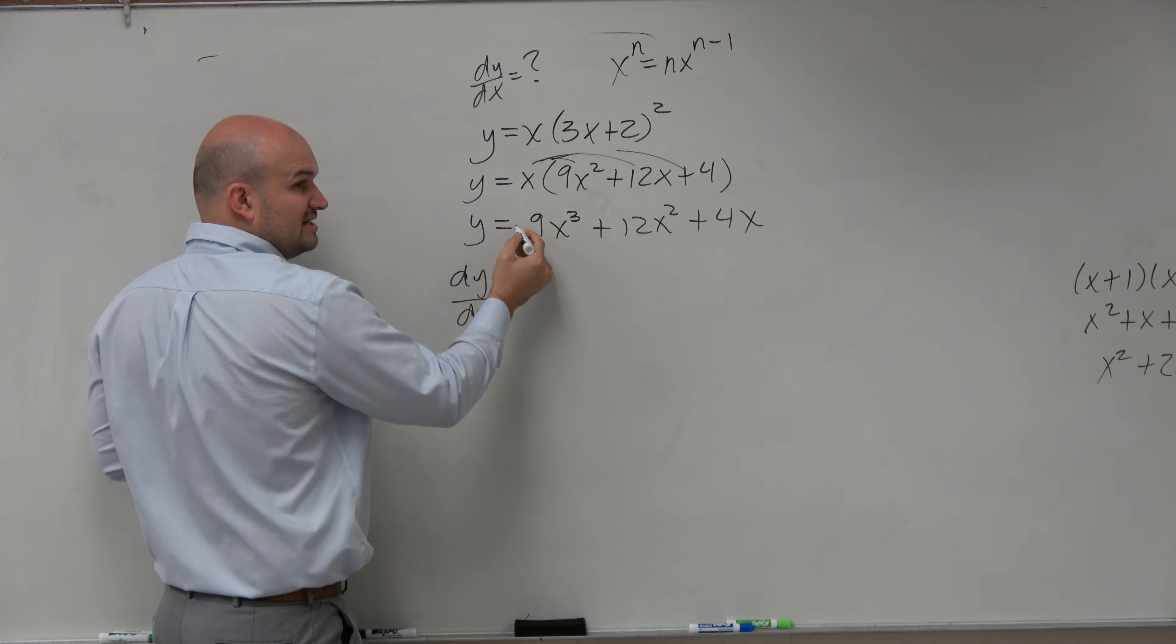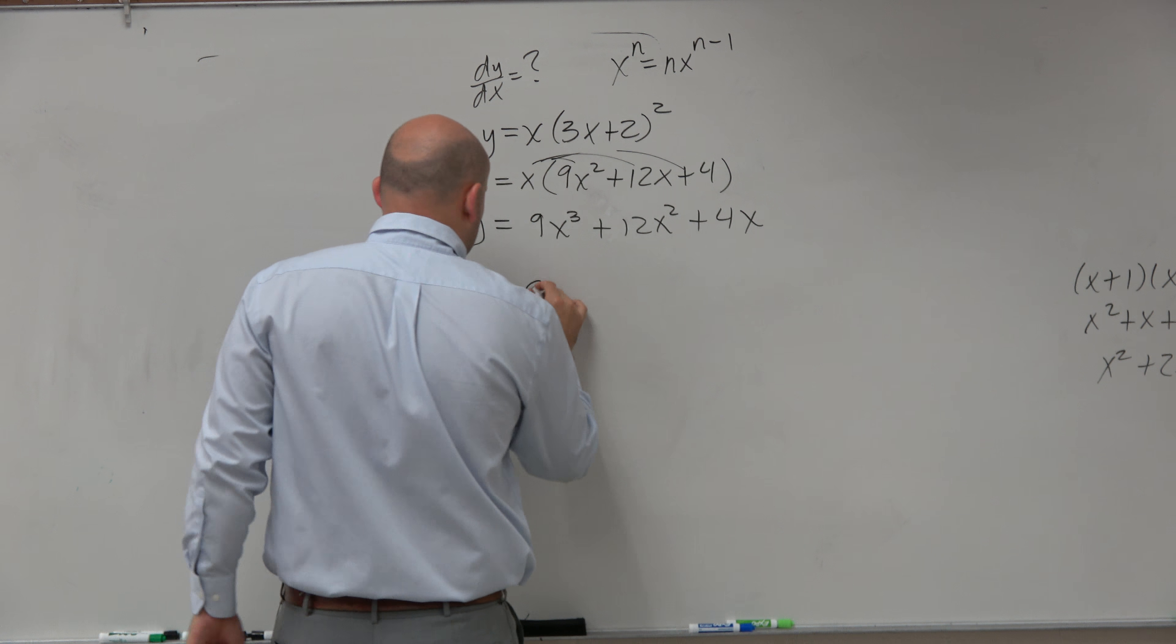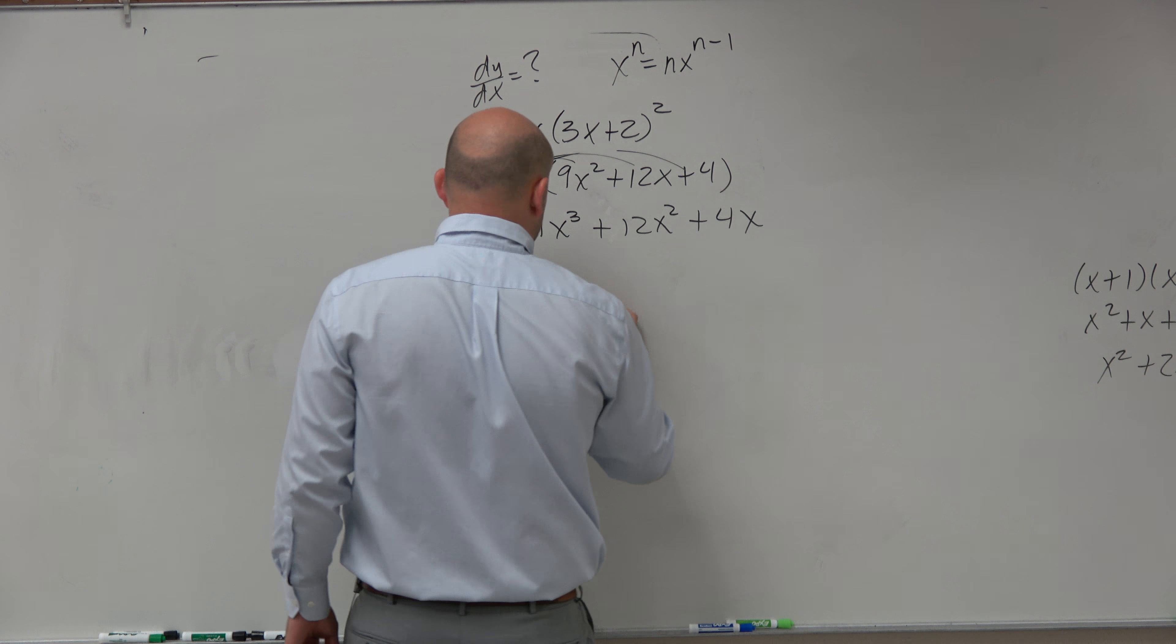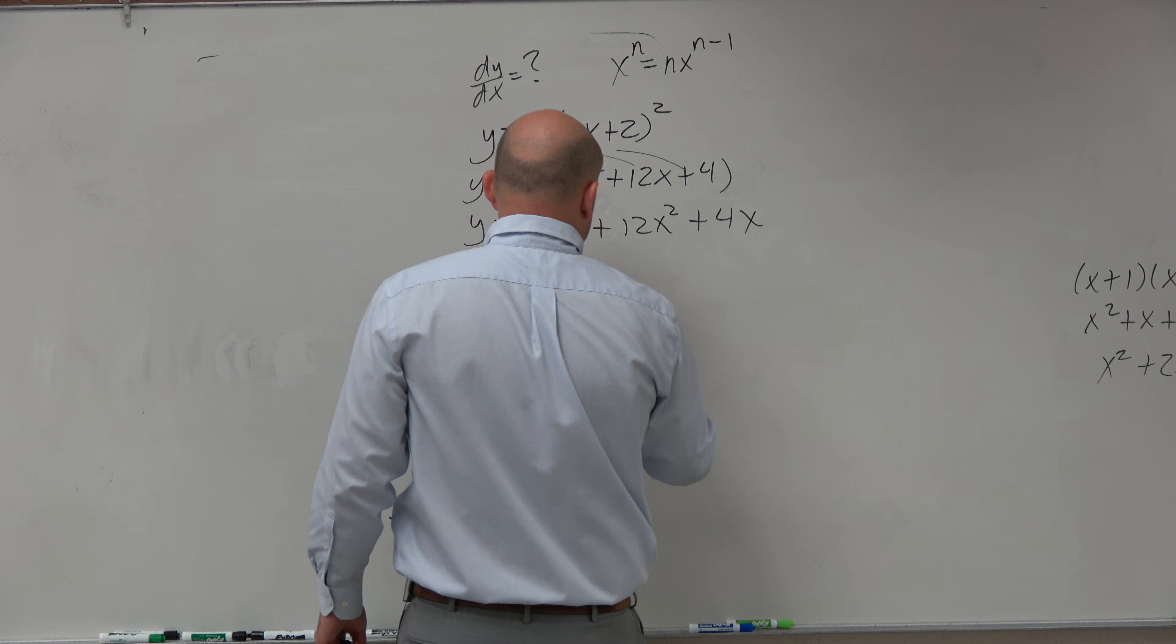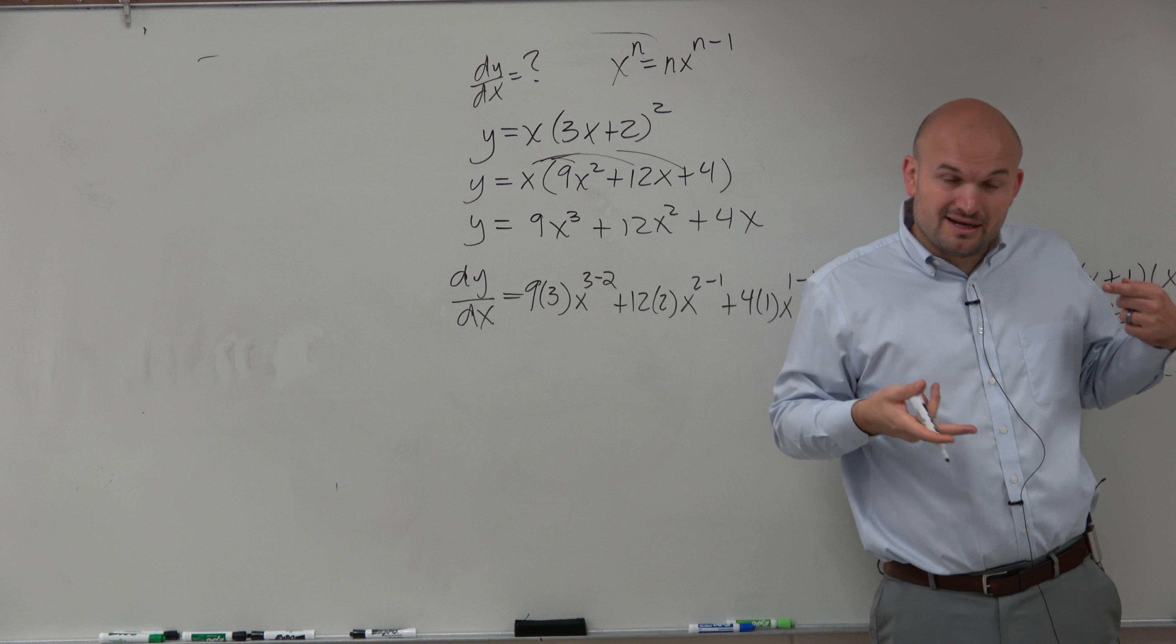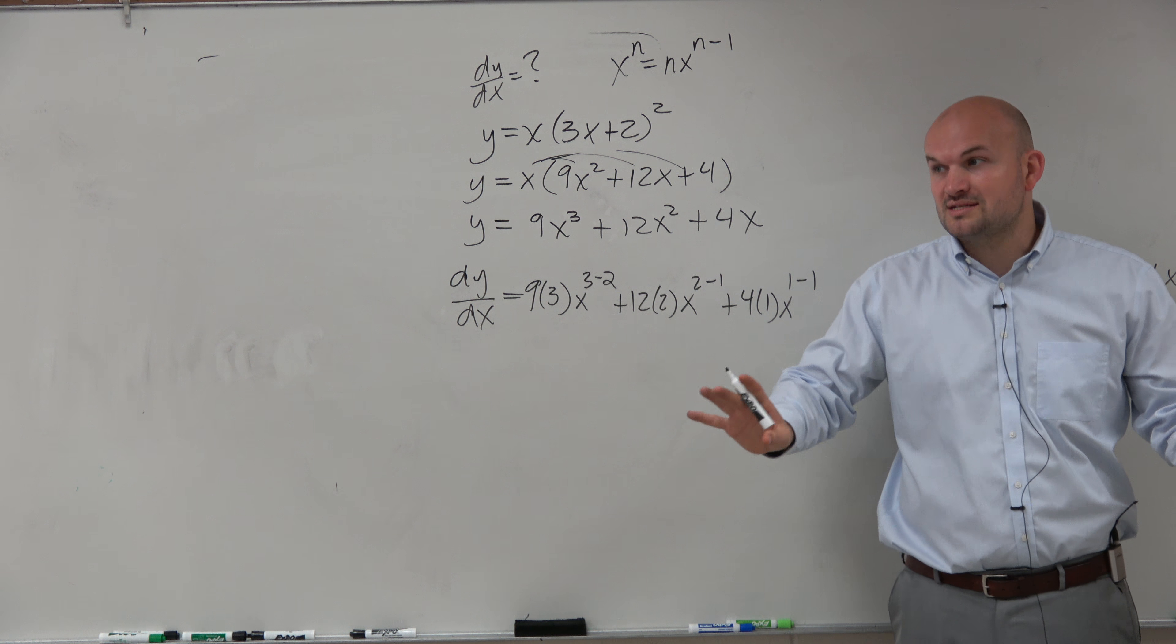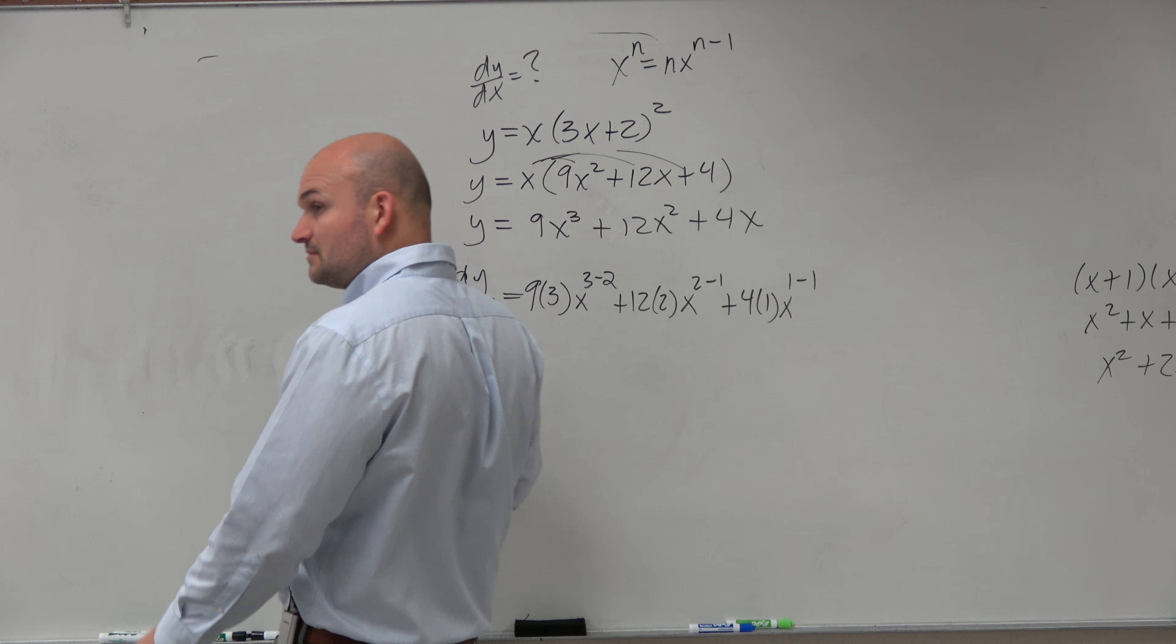Bring down the 3, 3 times 9, right? Do I need to show that, or are you guys comfortable? I'll do it one more time. Bring down the 3, x to the 3 minus 2, plus 12 times 2, x to the 2 minus 1, plus 4 times 1, times x to the 1 minus 1. This is what I'm doing in my head. I'm going to start doing this in my head from now on, so at least you guys know the process I'm doing.